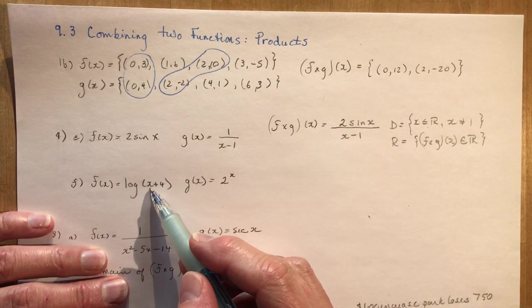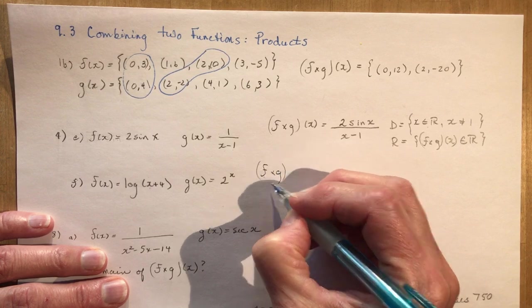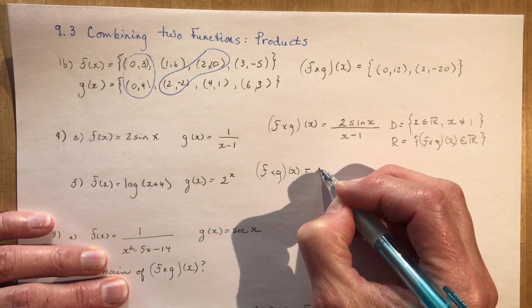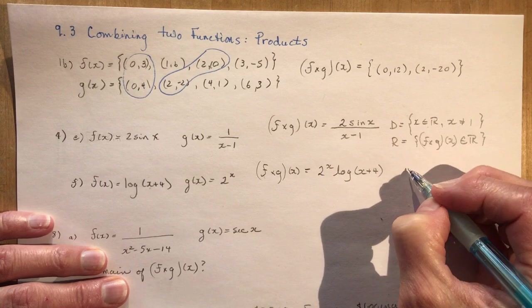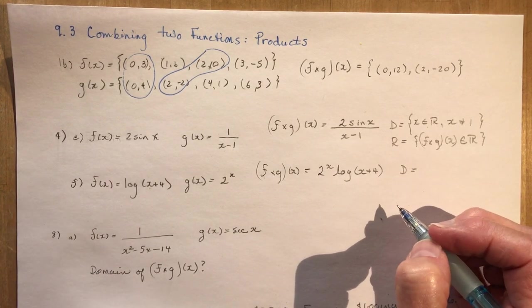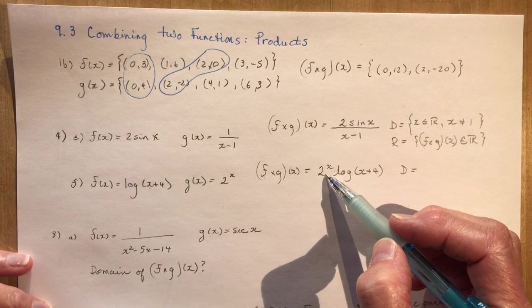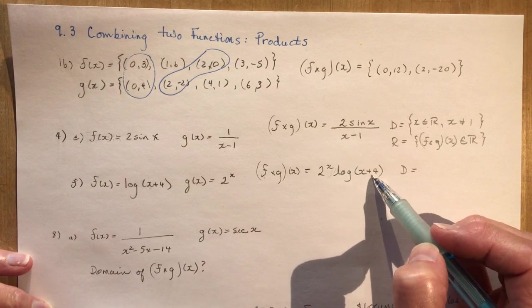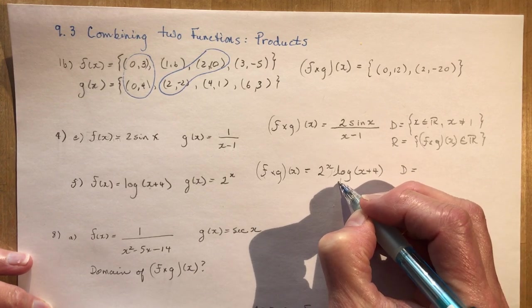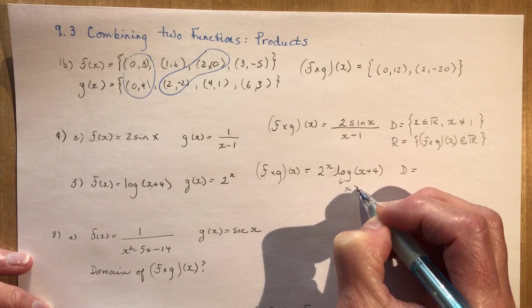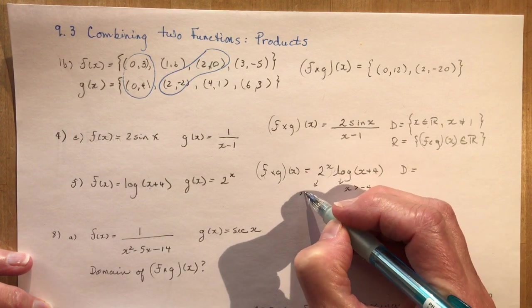Okay so for the second one here we have a logarithmic function times an exponential function. So I'm just going to write out what it would look like if I multiplied these two together. And usually put the exponential first. So it would be 2 to the x log of x plus 4. Now let's talk about the domain here. So domain means what can you put in for x and get an answer. So for the exponential function there's no restriction. x is an element of real numbers. But the logarithmic function you know that this x plus 4 has to be greater than 0. So that means that for this one, the log function, x has to be greater than negative 4. Not equal to because you can't have a log of 0.